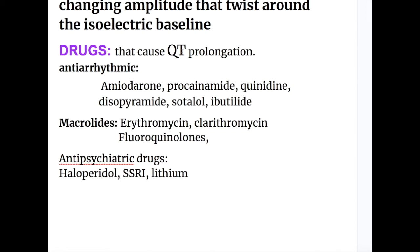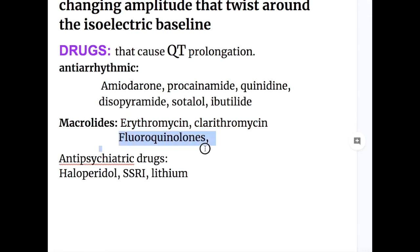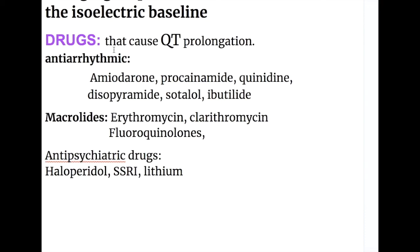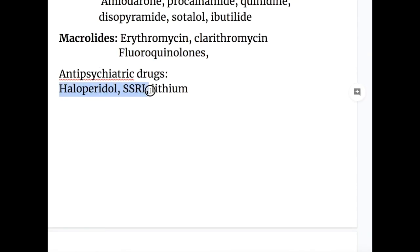Drugs that cause QT prolongation may also cause polymorphic ventricular tachycardia. These include: antiarrhythmics — amiodarone, procainamide, quinidine, disopyramide, sotalol, and ibutilide. Among antibiotics, macrolides such as erythromycin and clarithromycin, and fluoroquinolones may also cause polymorphic VT. Among psychiatric drugs, haloperidol, SSRIs, and lithium may prolong the QT interval.